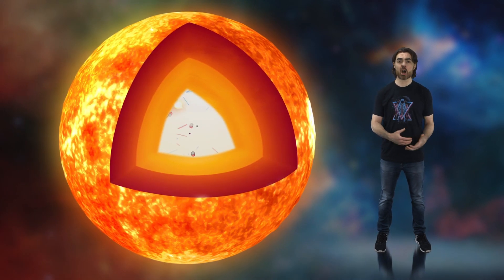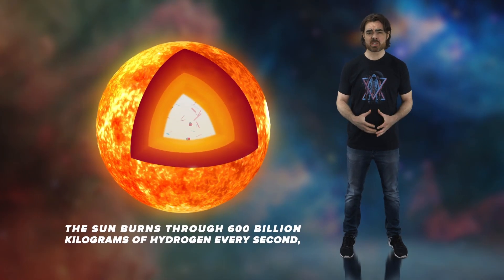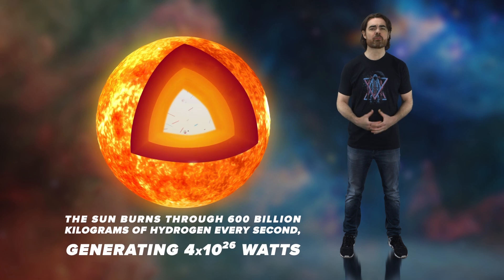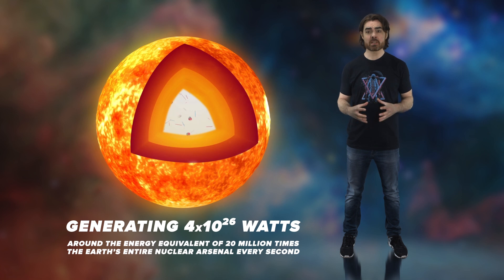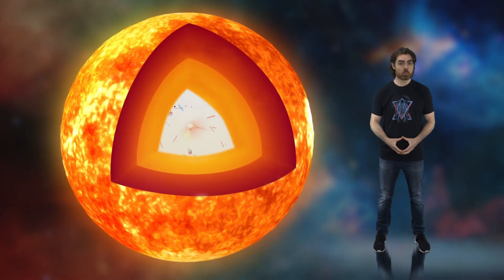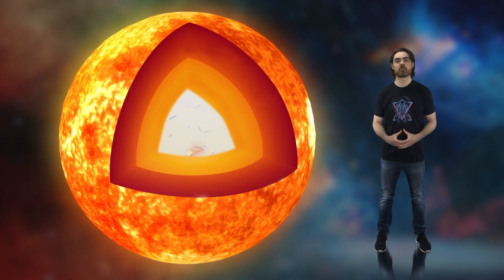Stars generate energy fusing hydrogen into helium in their cores. The sun burns through 600 billion kilograms of hydrogen every second, generating 4 × 10^26 watts, or around the energy equivalent of 20 million times the Earth's entire nuclear arsenal every second. This rate will only increase as the core's temperature increases. And the sun will burn through the hydrogen supply in its core in 5 billion years.